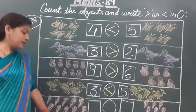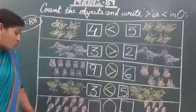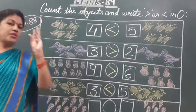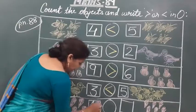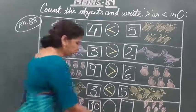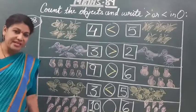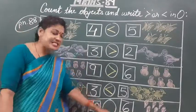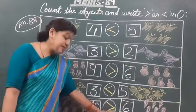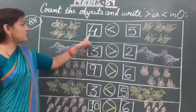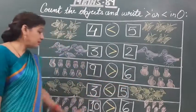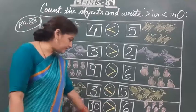In the last picture, delicious corn ice creams are given: one, two, three, four, five, six, seven, eight, nine, ten — ten corn ice creams. We will write number ten. And on the other side: one, two, three, four, five, six — only six corn ice creams. Definitely ten is greater than six, so we will put the greater than sign. To summarize: four is less than five, three is greater than two, nine is greater than six, three is less than five, and ten is greater than six.